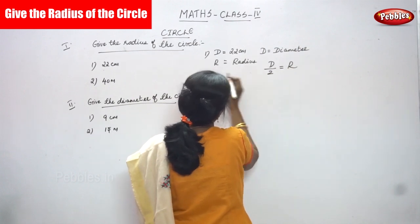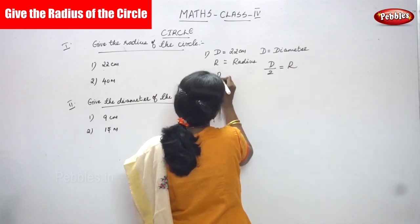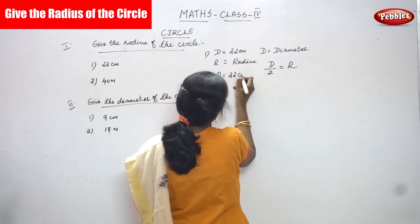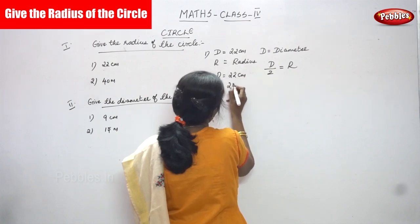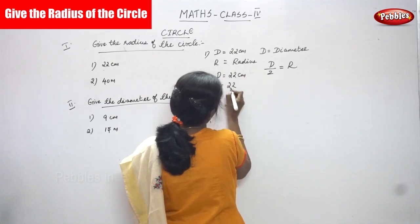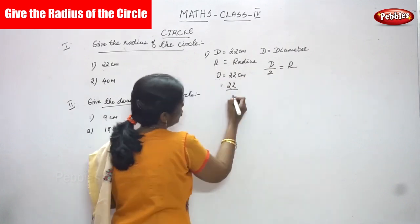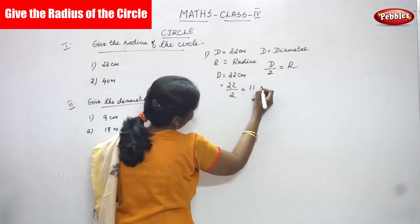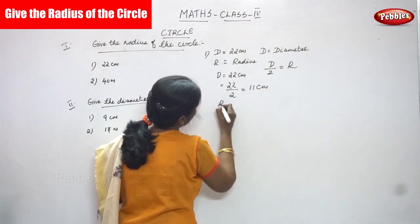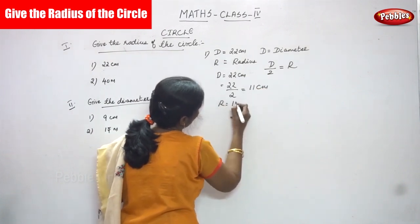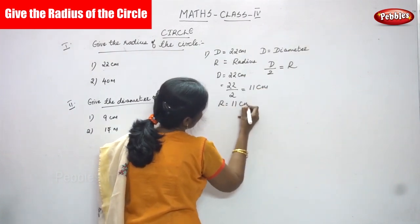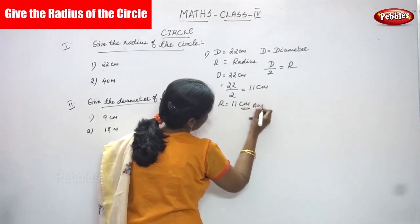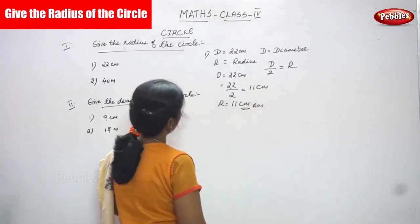In this question, D is equal to 22 cm. So, 22 divided by 2, you can get 11 cm. R is equal to 11 cm. This is the right answer for the question.